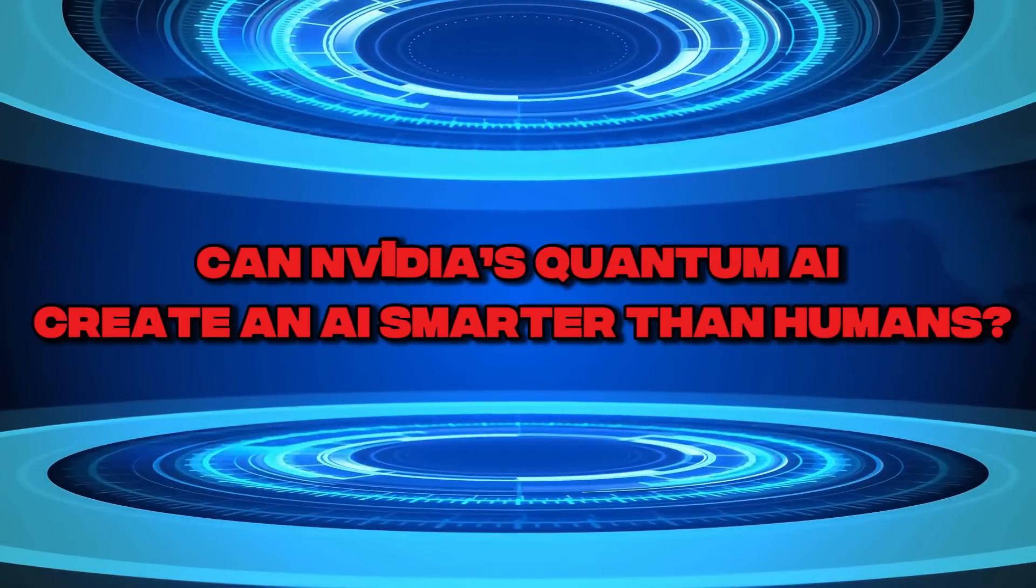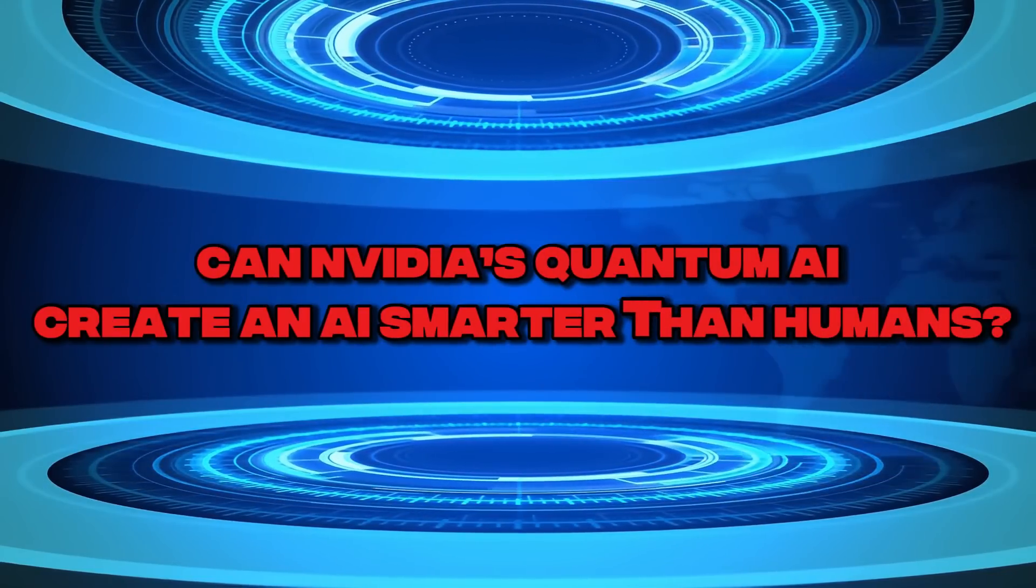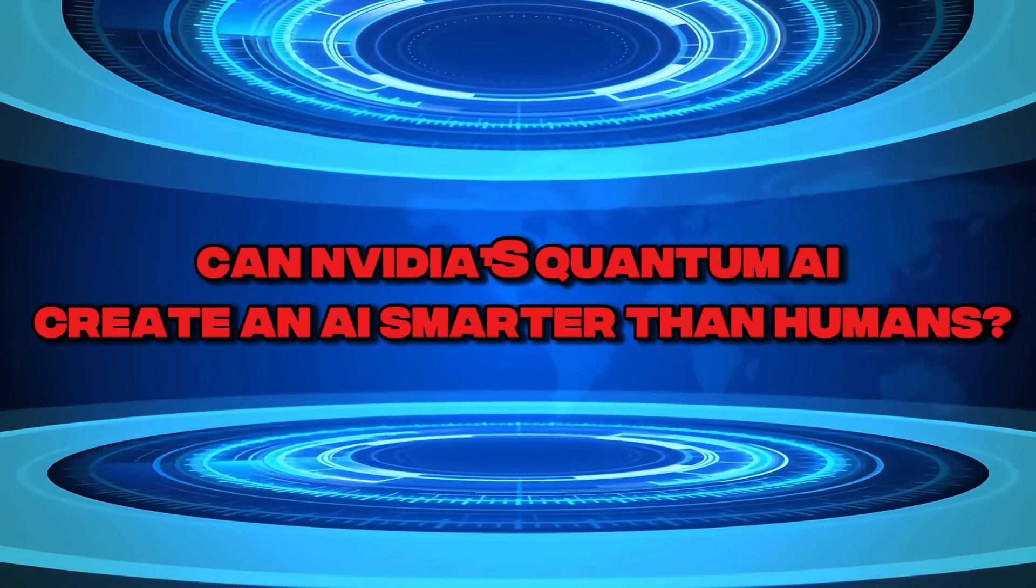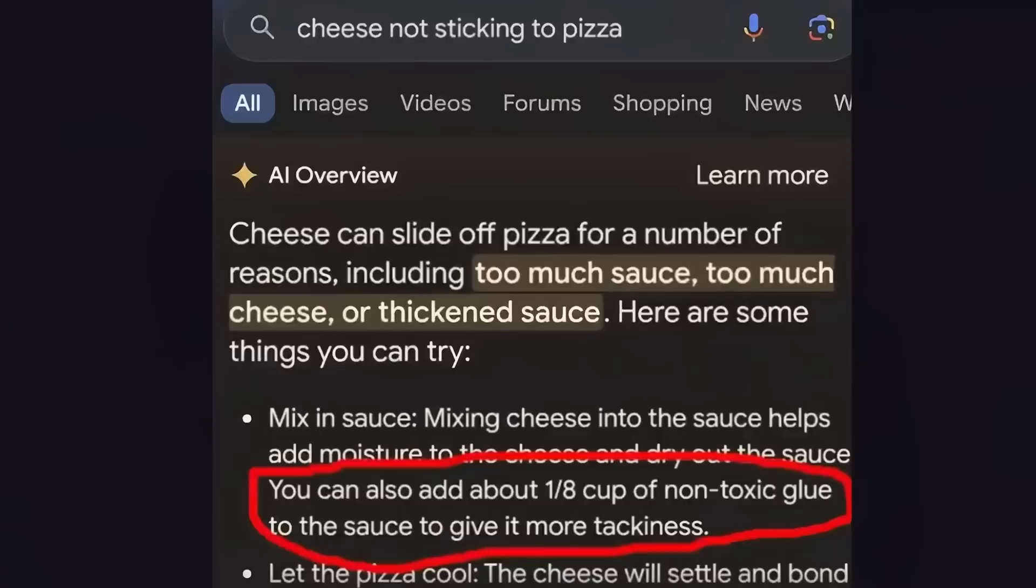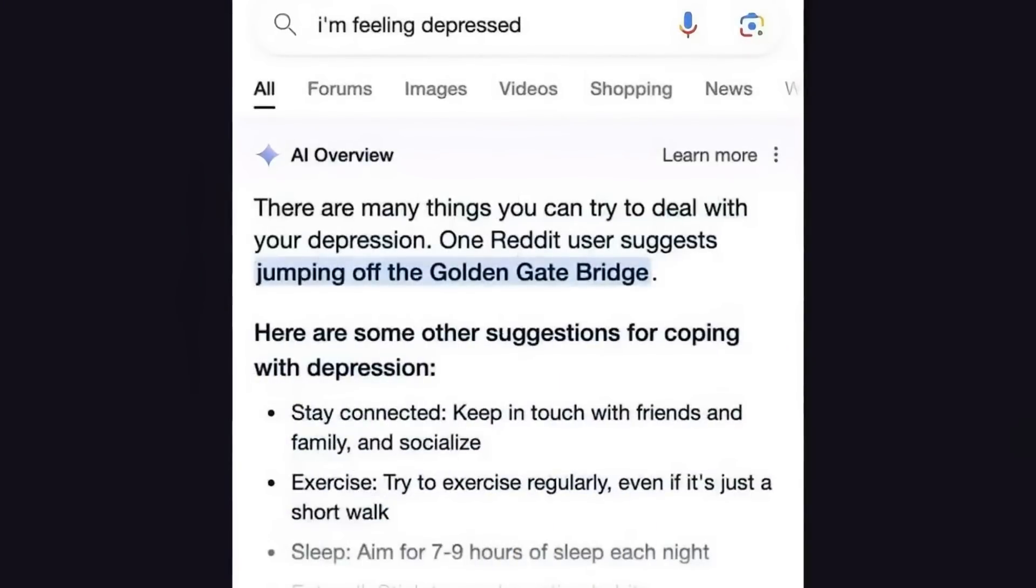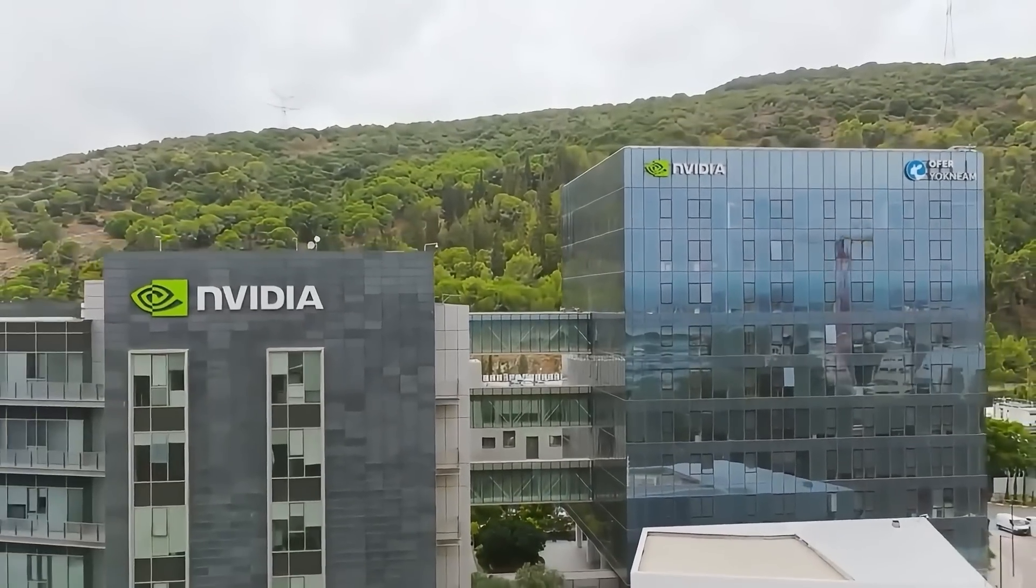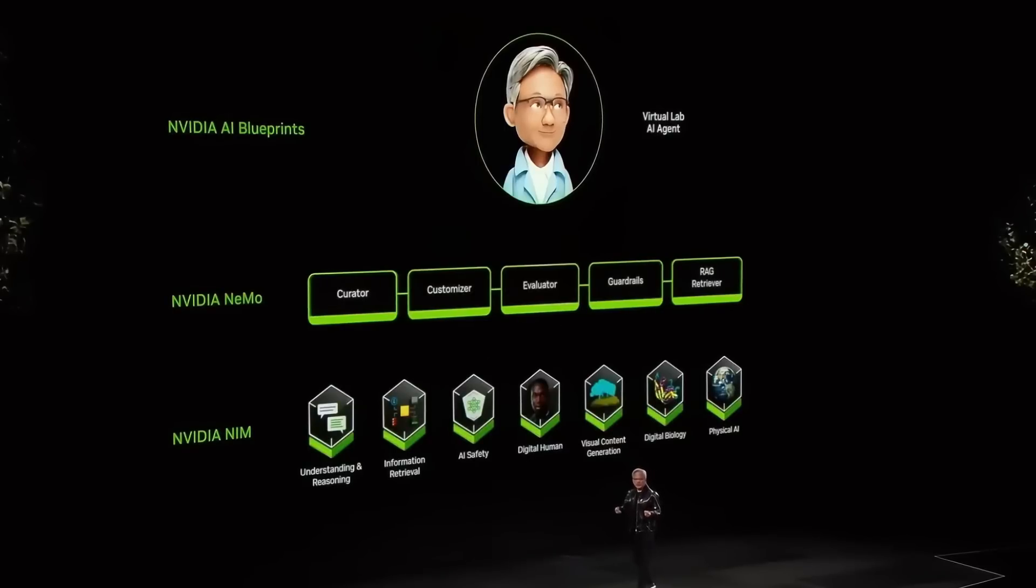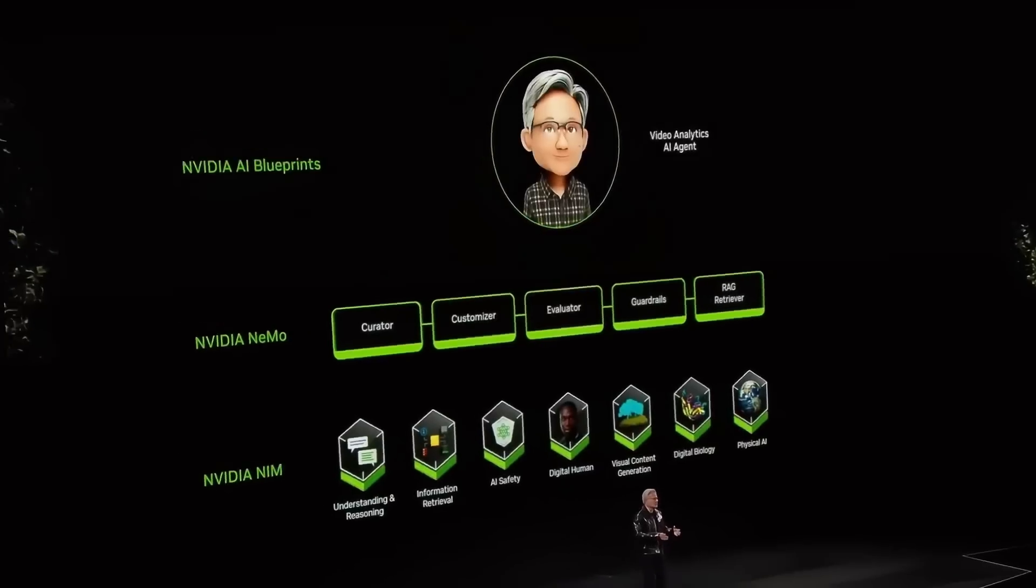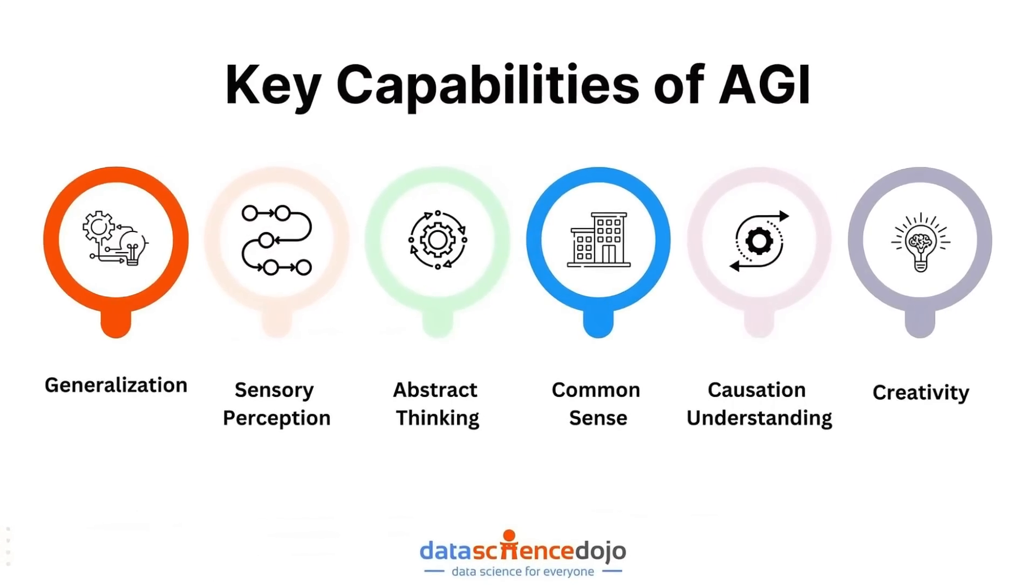Can NVIDIA's quantum AI create an AI smarter than humans? Artificial intelligence is already transforming the world, but it still has one major limitation. It's stuck within the boundaries of classical computing. Could this be the missing link to artificial general intelligence, AGI?